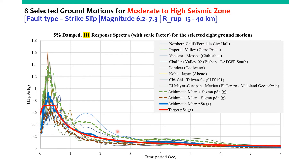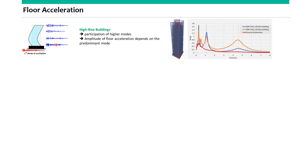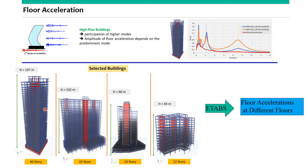Here the red one is the target response spectrum and these are the selected ground motions. In a high-rise building, the behavior of the block at the top storey is different from the bottom storey. When we compare the response spectra, the floor accelerations are drastically higher than the ground acceleration. To find the floor accelerations, we chose four case-study buildings — 40, 33, 23, and 12 storeys — using ETABS software.